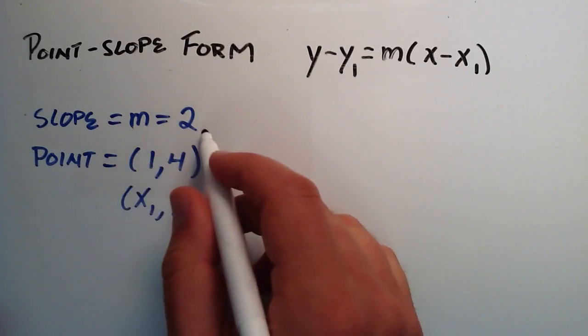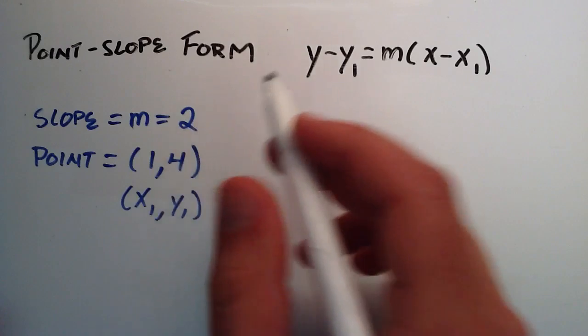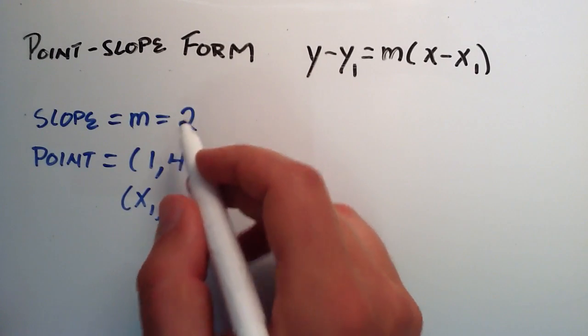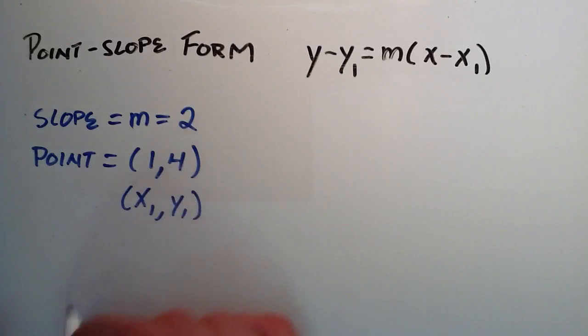And from this information we're going to determine what the line is that has the slope of 2 and has the point (1, 4) on the line.